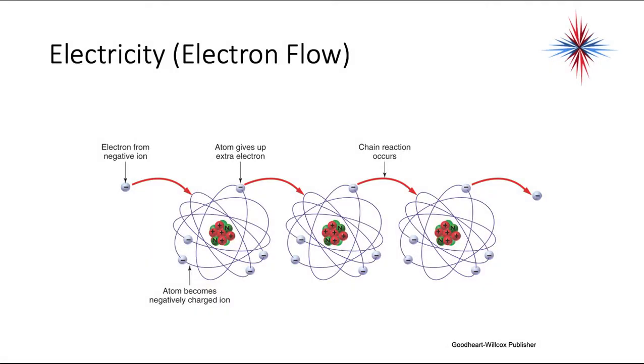For electricity, which is electron flow, the negative ion from a negative ion jumps to another atom, which then becomes negatively charged. Then the atom gives up an electron, which jumps to another atom, and the chain reaction continues to occur. So electricity is the movement of electrons from one negative ion to another atom.